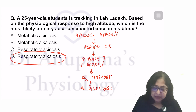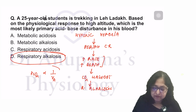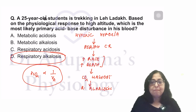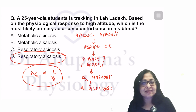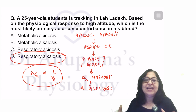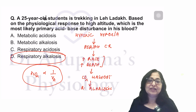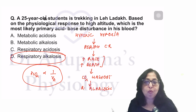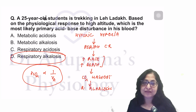Please remember: PCO2 levels are inverse to alveolar ventilation. More alveolar ventilation means less CO2; less alveolar ventilation means more PCO2.